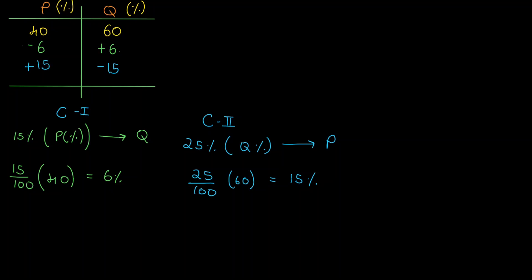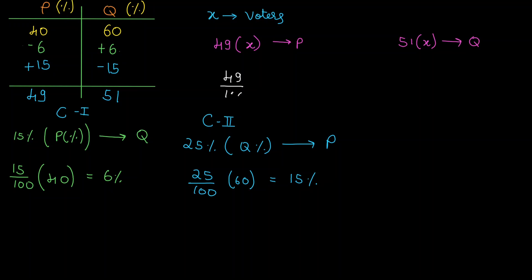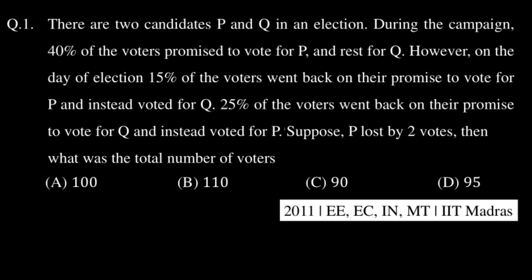If we calculate this, we get 49% for P and 51% for Q. Let us consider that there are x number of voters. In that case, 49% of voters voted for P and 51% voted for Q. Now, getting back to the question — P lost by 2 votes, so P got fewer votes than Q, and the difference is 2.